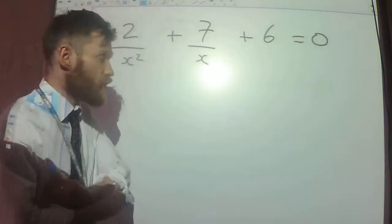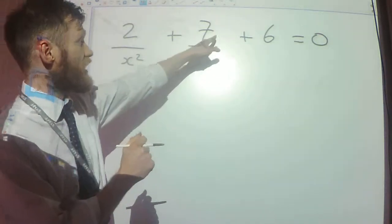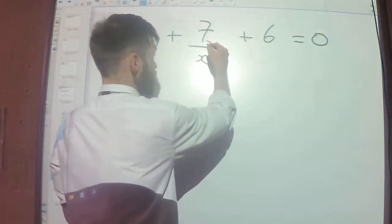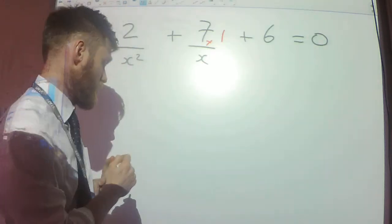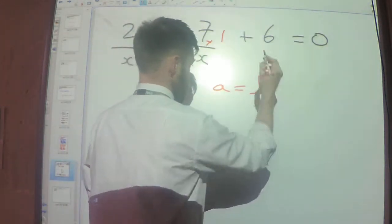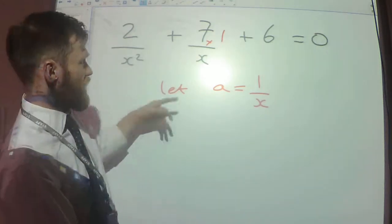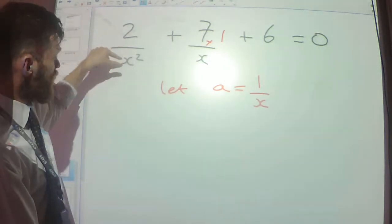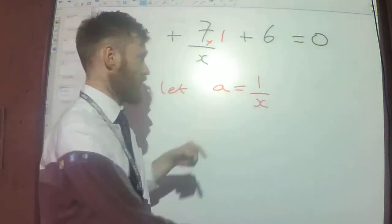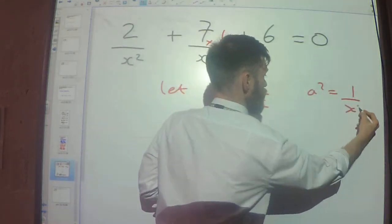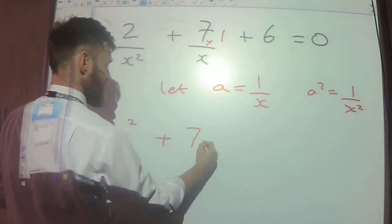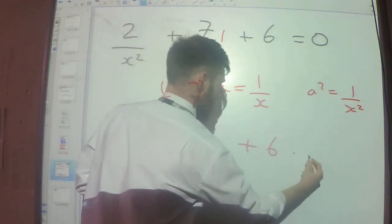Okay, two more examples. This one here — same idea as before. I'm looking at the variable in the middle, which in this case you can think of as being 7 times 1 over x. So just to mix things up, I'm going to say let a equals 1 over x. In the middle I'll have 7a, and at the front I'll have 2a squared, because if I square 1 over x, I'll get 1 over x squared. So I'll get 2a squared plus 7a plus 6 equals 0.